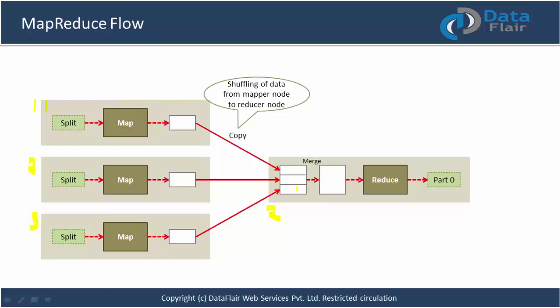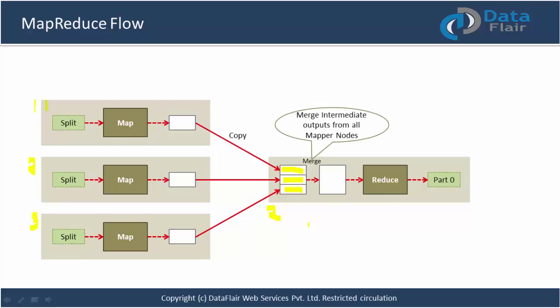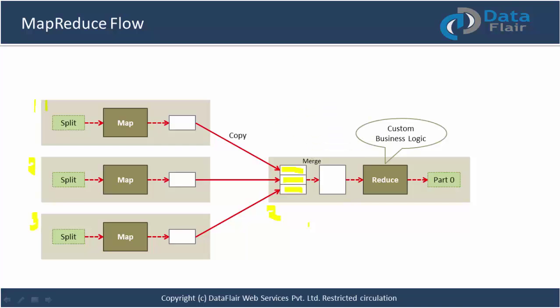On the reducer node we have received the intermediate output from slave 1, intermediate output from slave 2, and intermediate output from slave 3. From all three slaves the intermediate output came to slave 2, which is the reducer node. The framework will then merge the intermediate output from all mapper nodes and consolidate them. This merged intermediate output is given as input to the reducer — the second phase of processing — where the user specifies their own business logic based on their requirements.